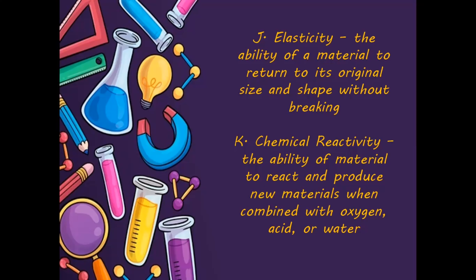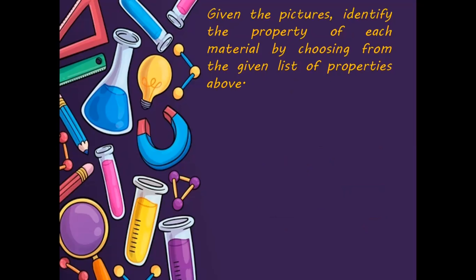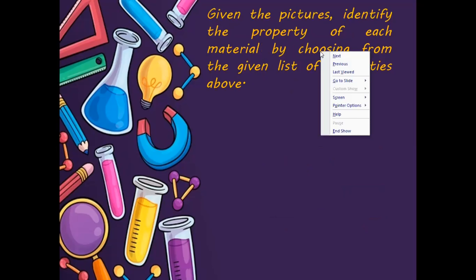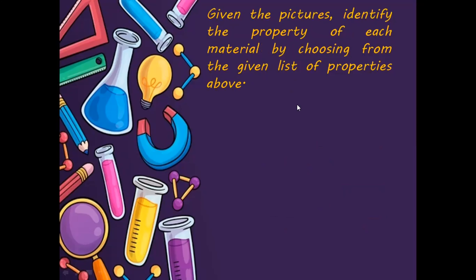Nagkakaroon ng chemical reaction yung isang bagay pag siya ay na-expose sa oxygen, binabad sa acid, o sa water. So let's have an activity — given the pictures, identify the property of each material by choosing from the given list of properties. We have to choose from: ductility, malleability, porosity, flexibility, solubility, brittleness, thermal conductivity, chemical reactivity, flammability, or elasticity.